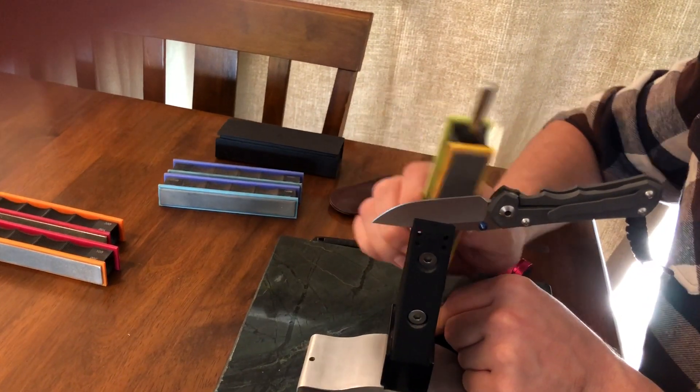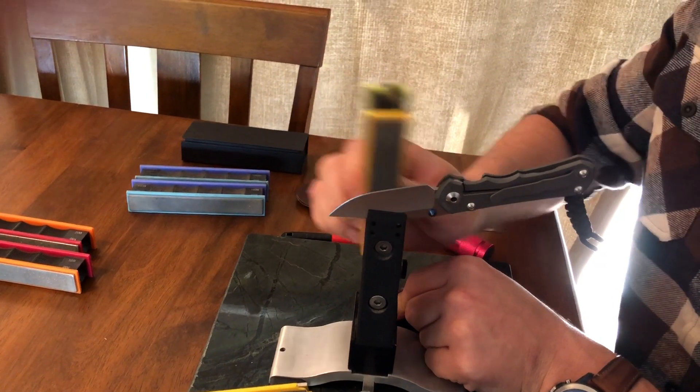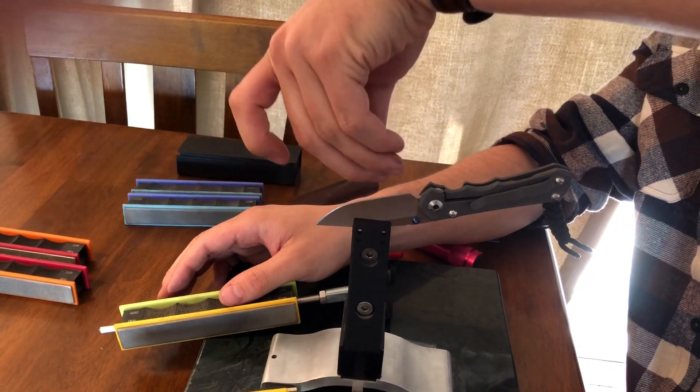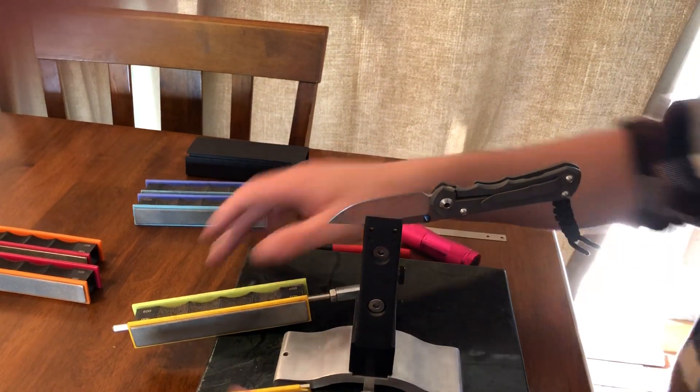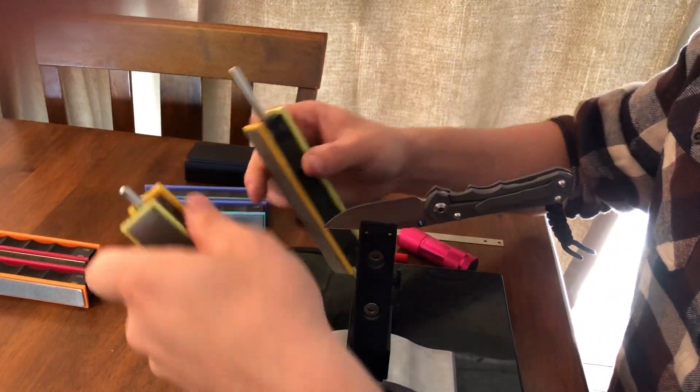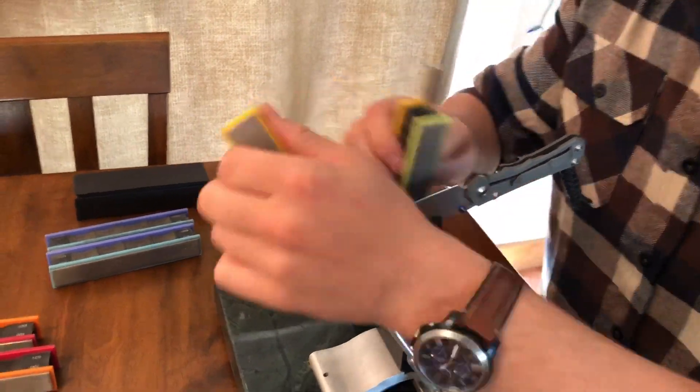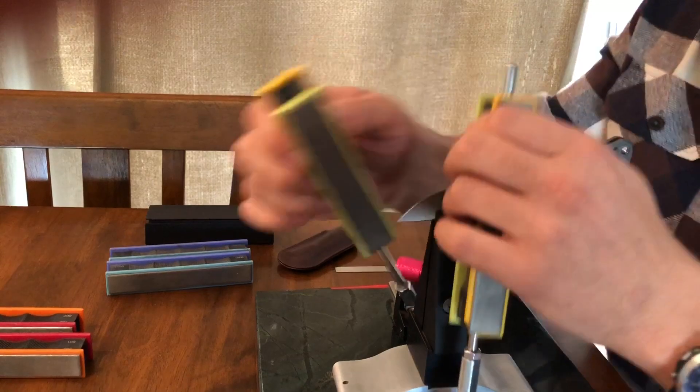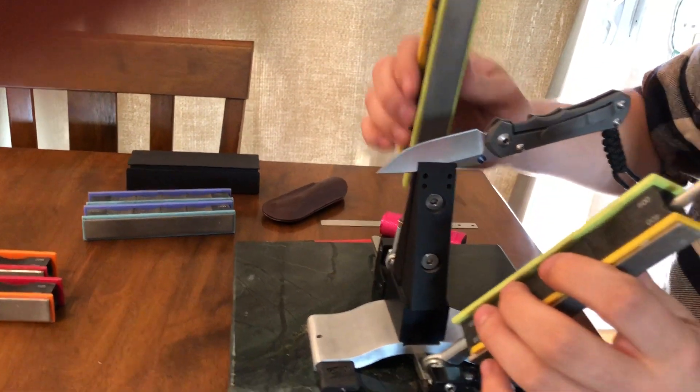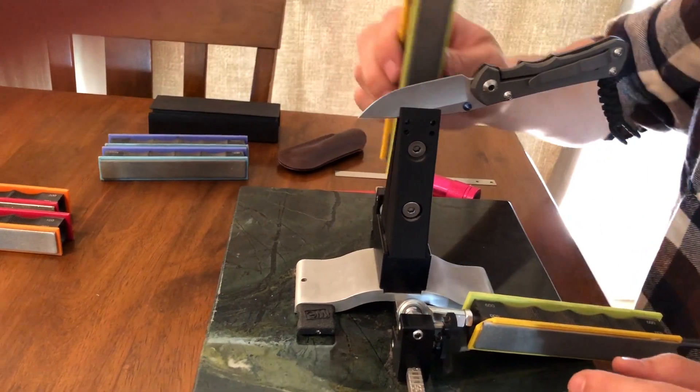Once you found the burr then you do the same on the opposite side, there it is. Once you found it you can do like five passes on both sides and then switch to your next grit, this is a 600 grit. Typically I'll do about 20 passes per stone per side and the pass is really simple, all it is to start with your stone all the way down against the heel of the knife and finish it so that the bottom of the stone comes off the tip of the knife, just like so.